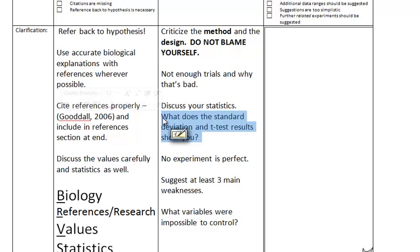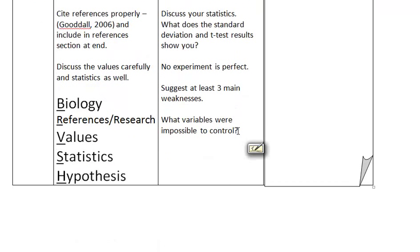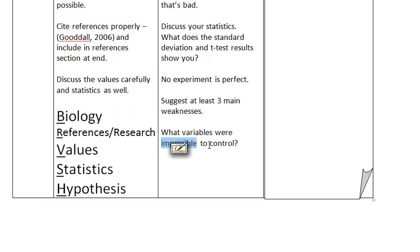Discuss your statistics, standard deviation. If your data was all over the place, if your repeat trials show a very wide standard deviation, then that suggests that something about the way that you're conducting your experiment is not very accurate, or you're not being very precise with your tools. How can you improve that? No experiment is perfect, so please don't hand in a lab saying there were no suggestions for improvement, no problems in the experiment. That's just silly. Suggest at least three main weaknesses. I would aim for five because you're looking for at least three really strong ones. What variables were impossible to control? Talk about that as well. Surely there is a way to control most of these impossible variables, so suggest them on the right here.